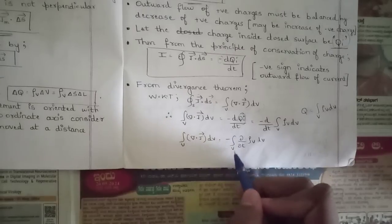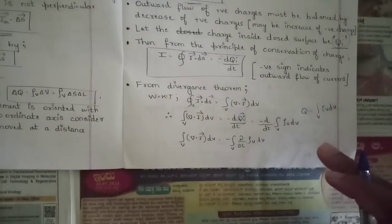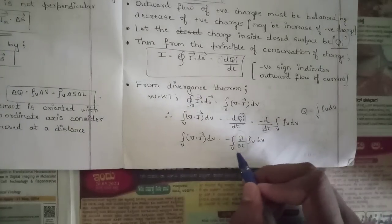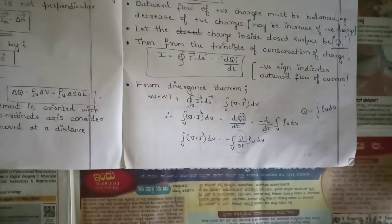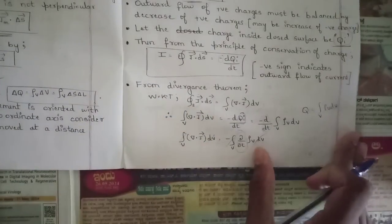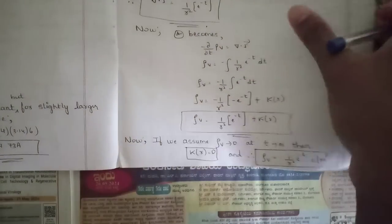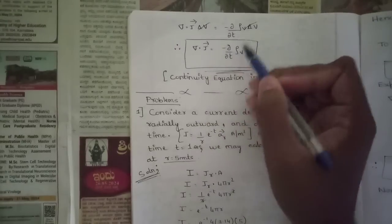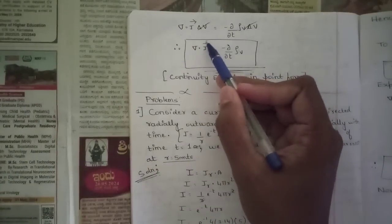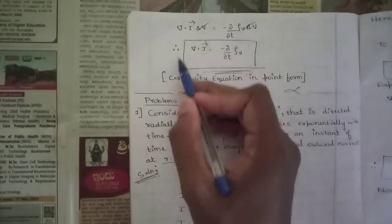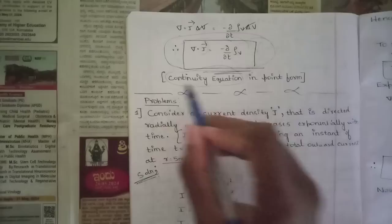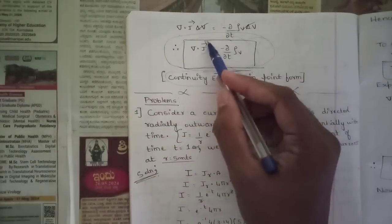Substituting: ∫∫∫ (del·J) dV = −∫∫∫ (∂ρv/∂t) dV, where the total time derivative becomes a partial derivative when moved inside the integral. Canceling the volume integrals and dV from both sides gives del·J = −∂ρv/∂t. This is the continuity equation in point form, relating current density to volume charge density.